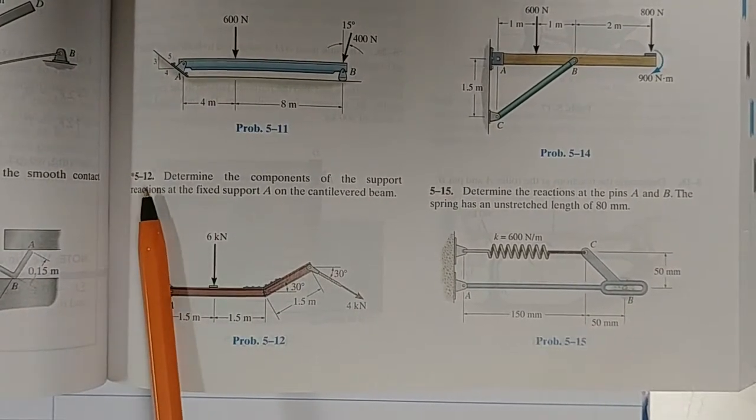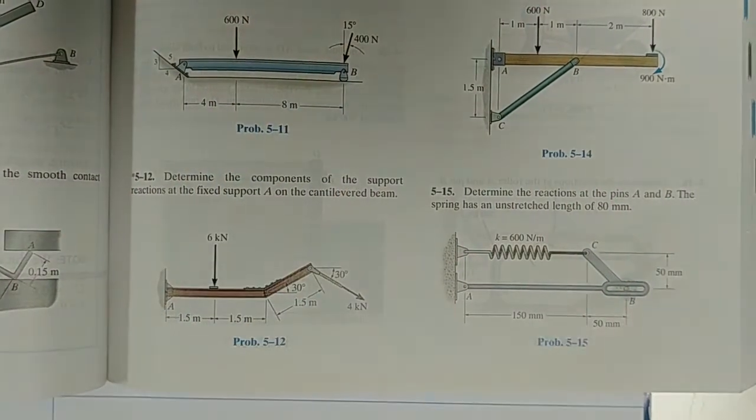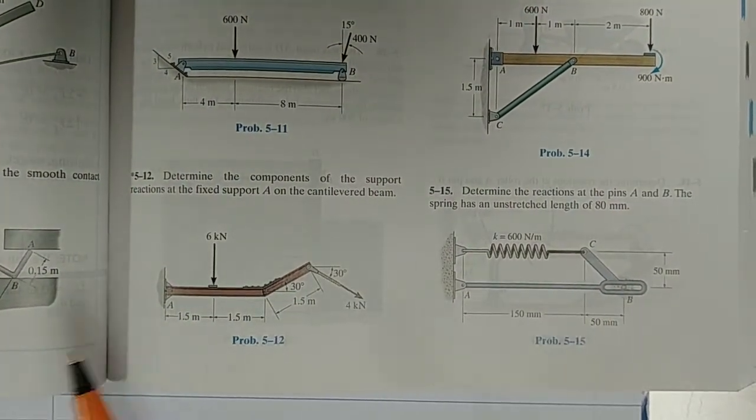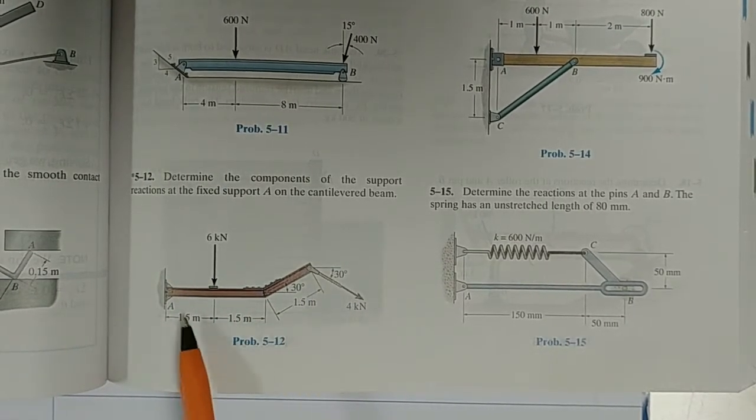Okay, we're going to look at example 5.12 in the 13th edition. This is chapter 5 on equilibrium of rigid body. This is the drawing here, this is the figure.